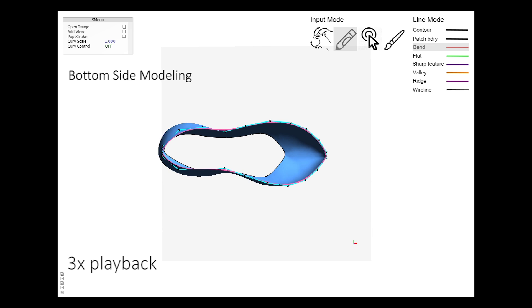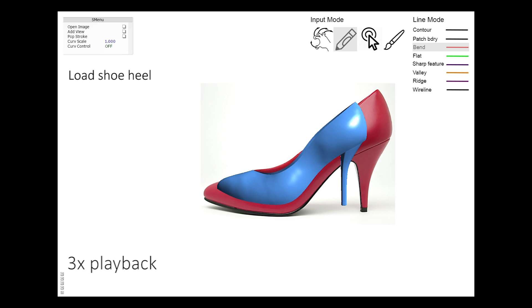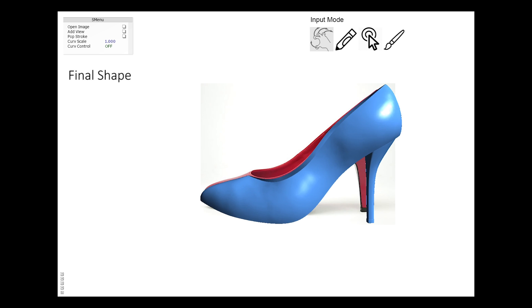For the bottom side, we make use of the contour curves from the other views and draw the inner strokes only. Then we get the final shoe model.